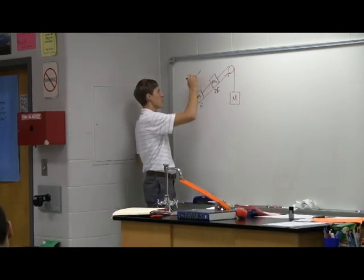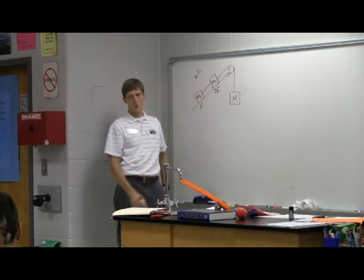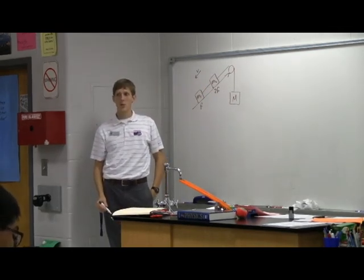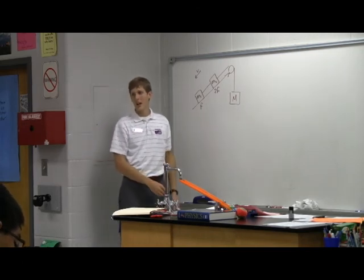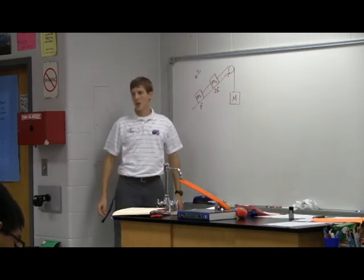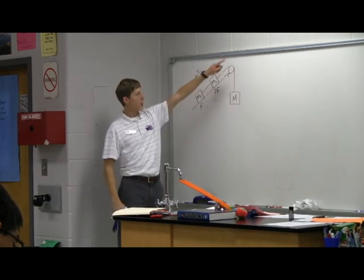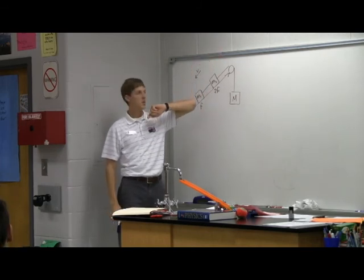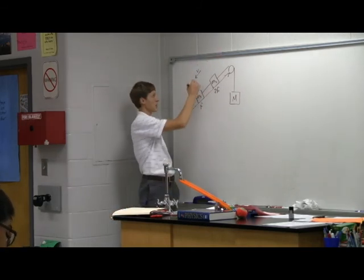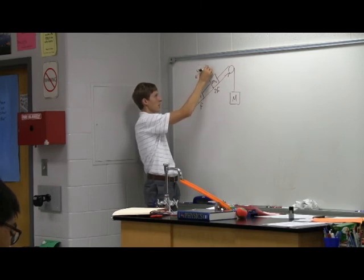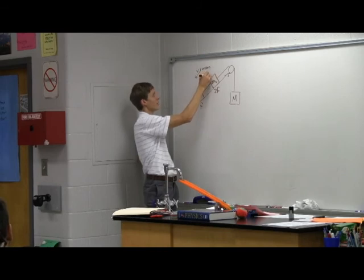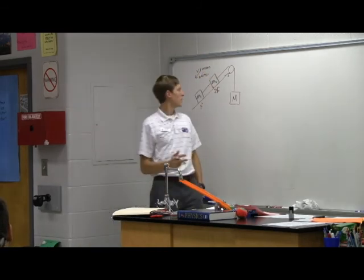We know that the system is moving this way. So that tells us which direction friction is pointing for both of these, which is? The opposite. Yeah, that's right, good job. It's pointing up the slope like that. It's opposing motion. We also know the velocity is constant, right? Which means what? Acceleration is zero. Yeah, that was so exciting.